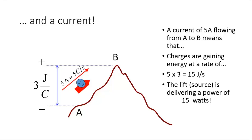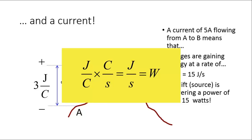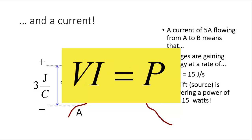Voltage difference between A and B multiplied by current is power. Do units match? Let's see: joules per coulomb multiplied by coulombs per second — that is joules per second — that is watts. Yes, units do check. Voltage times current is power.